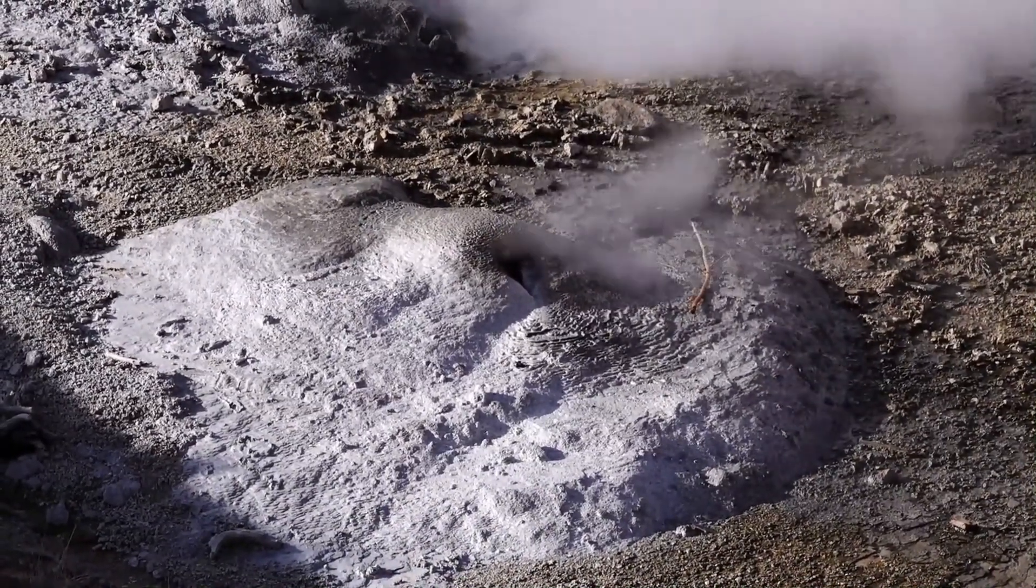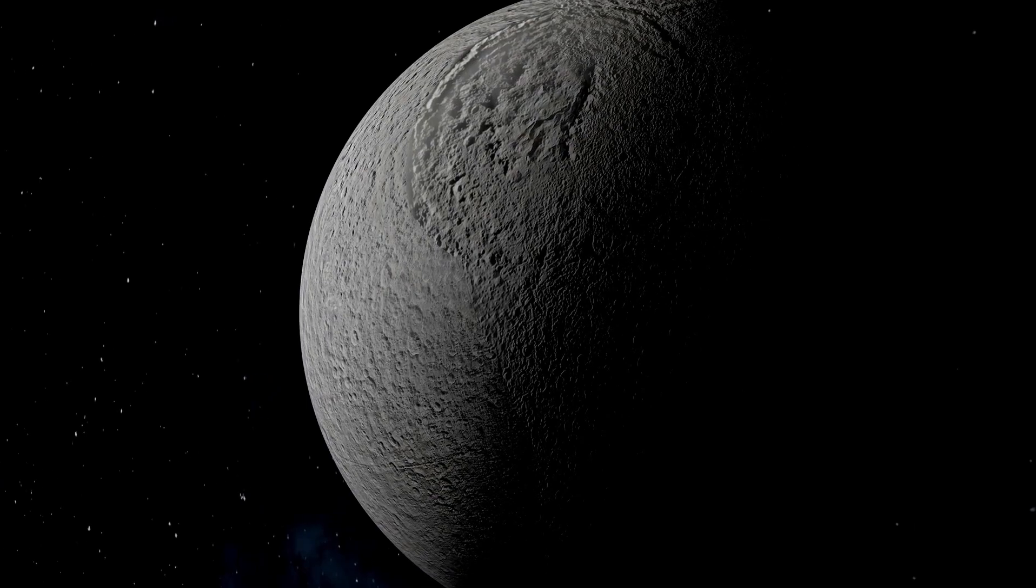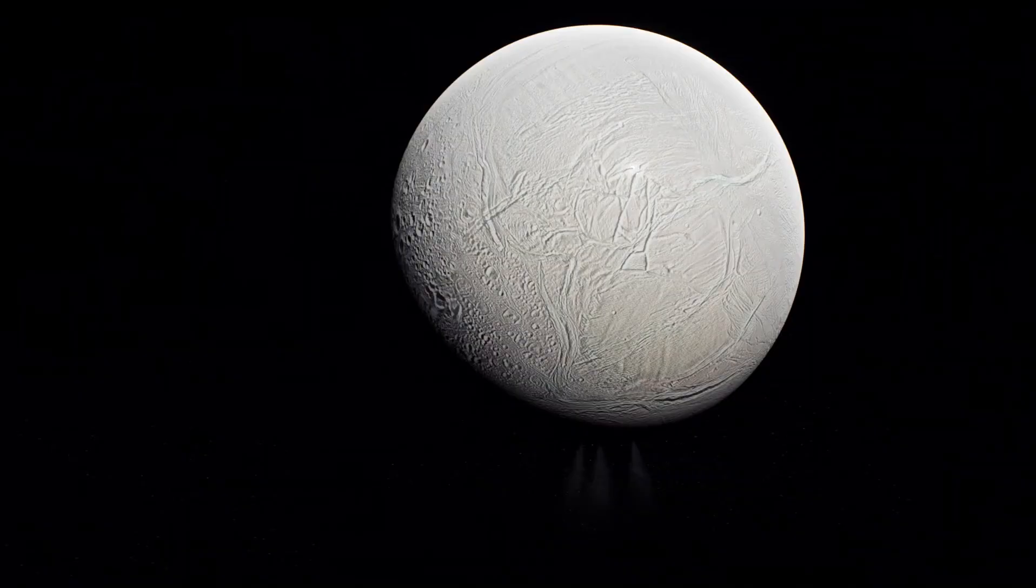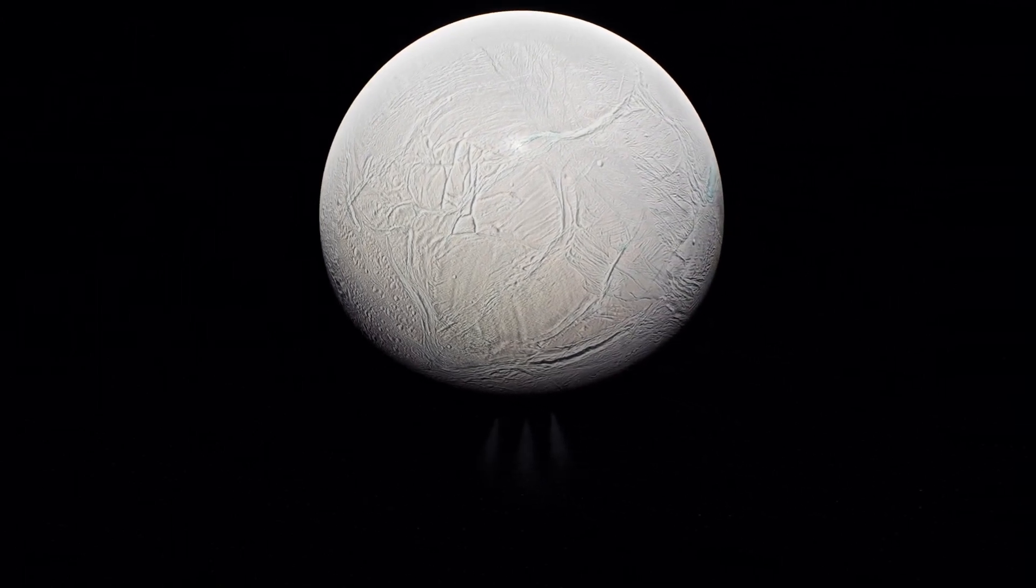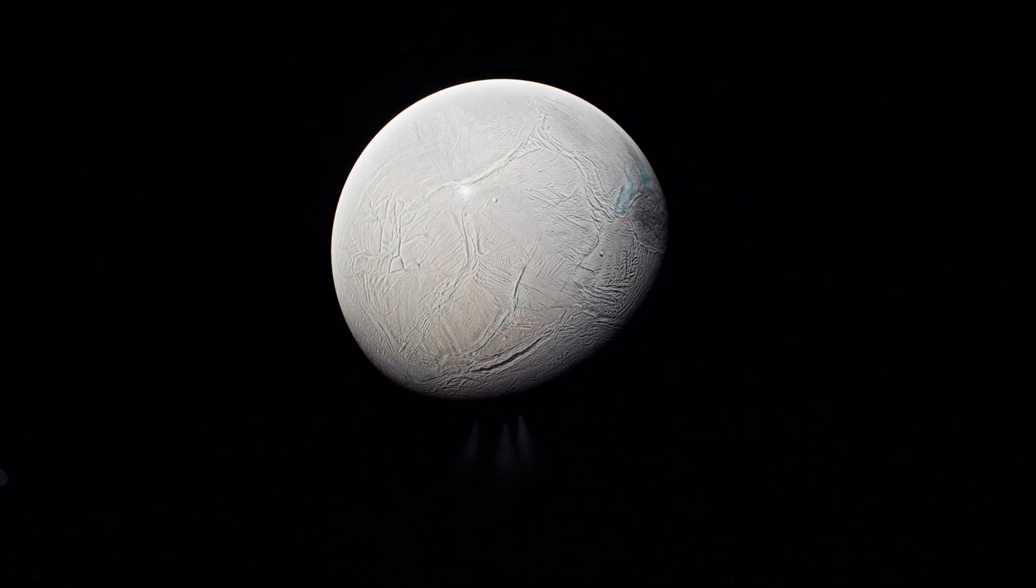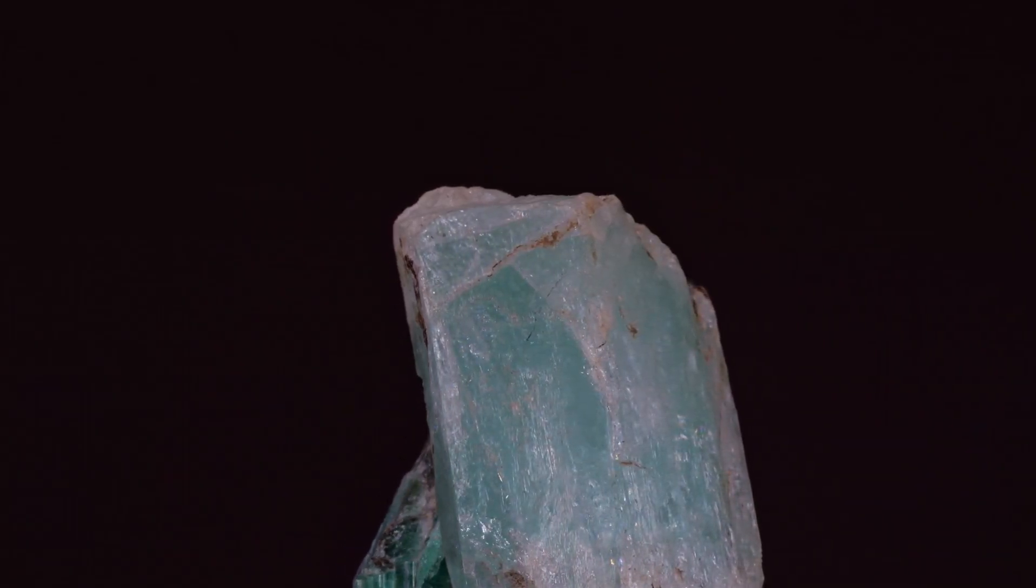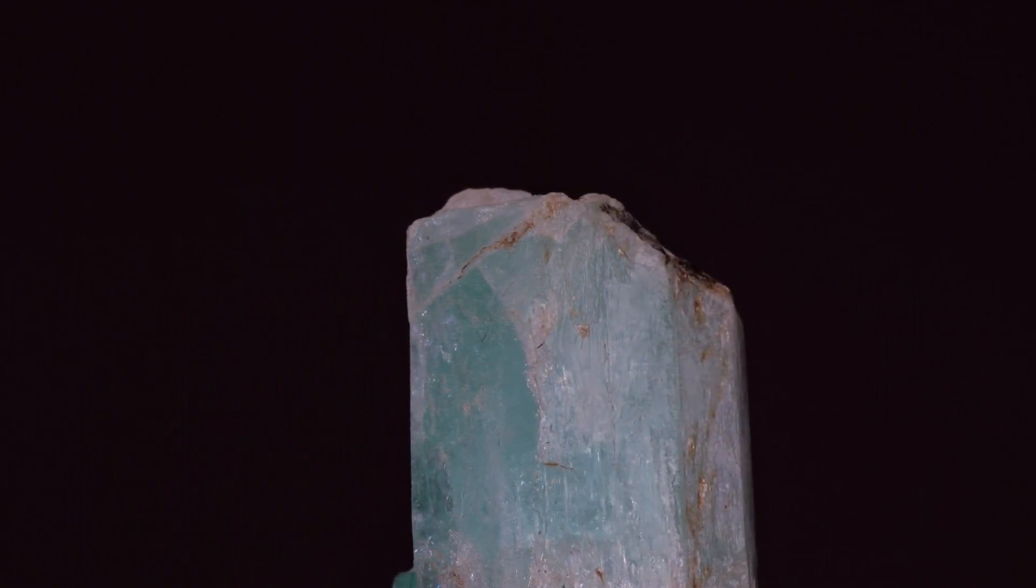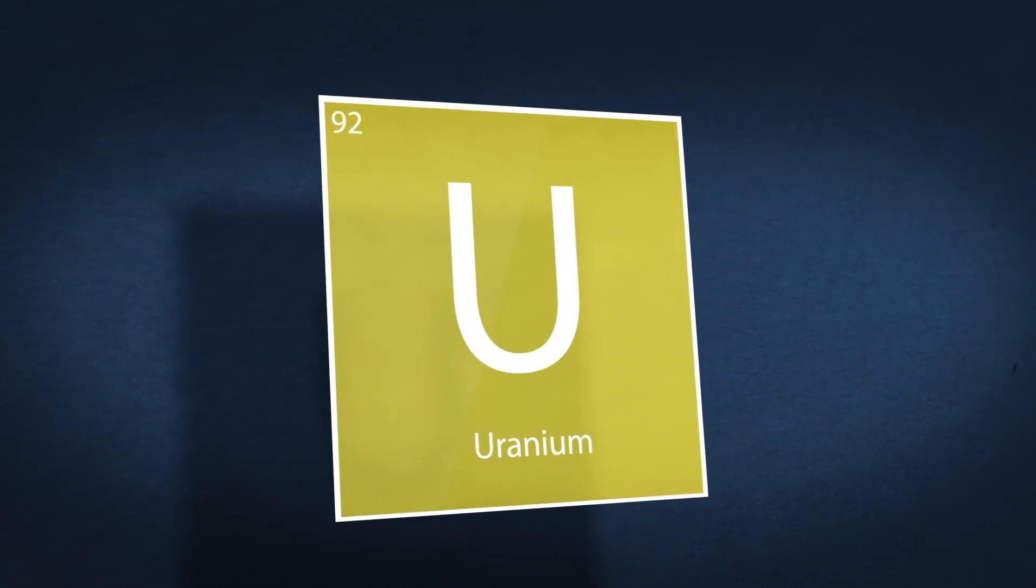Beyond Saturn lies Uranus, a pale blue-green world often overshadowed by its more flamboyant siblings. Its atmosphere is rich in hydrogen, helium, and methane, the latter responsible for its striking hue. Unlike other planets, Uranus rotates on its side with an axial tilt of 98 degrees. This unusual orientation likely resulted from a cataclysmic collision with an Earth-sized object during its formation.